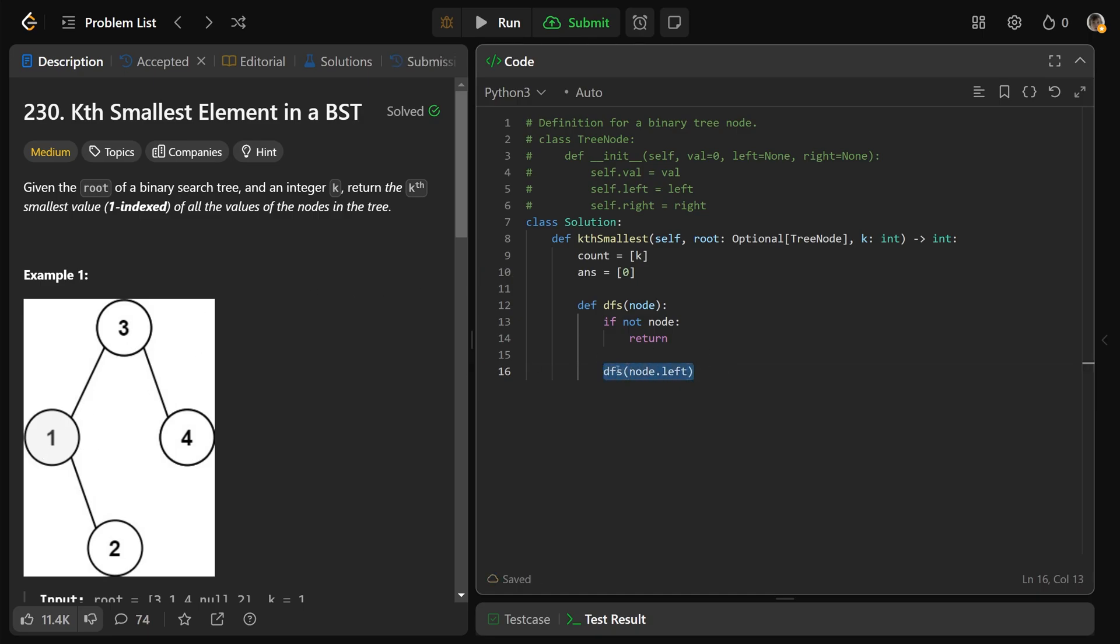But then after we're back from this left call here, we are ready to process ourselves. Now to process ourselves, we want to say if the count, aka the count at 0, if that is equal to 1, well, then we've actually found the value of interest here. And so we want to set answer at 0 equal to our node's value. If we didn't find that, then okay, that's fine. We just want to count at 0 is going to decrement. So that is going to equal itself minus 1.